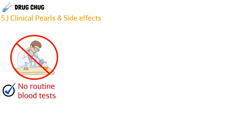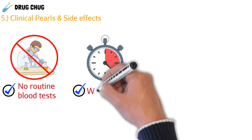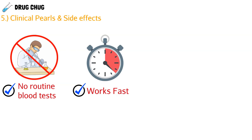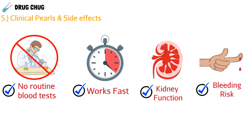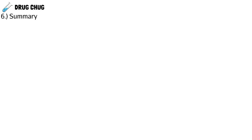Some quick clinical pearls and side effects: First, unlike warfarin which requires INR monitoring, there are no routine blood tests needed for Factor Xa inhibitors — they are more predictable. Second, these drugs work very fast on activated clotting Factor 10, unlike warfarin which has a delayed onset. Third, kidney function matters since these drugs are eliminated through the kidneys — hence the variable dosing. Fourth, any anticoagulant carries a bleeding risk.